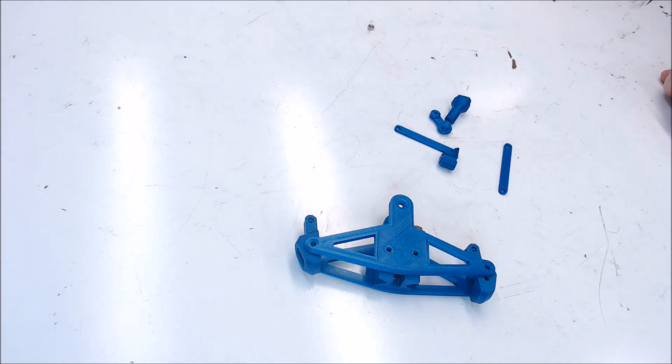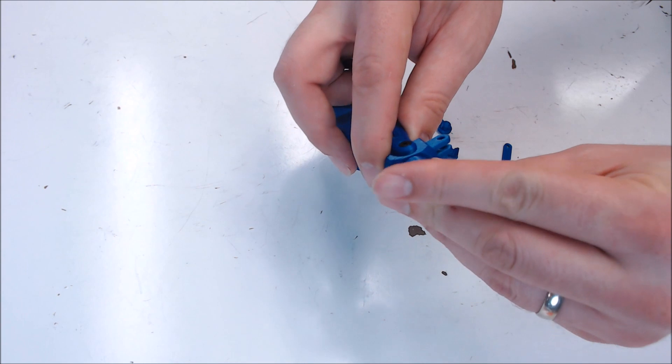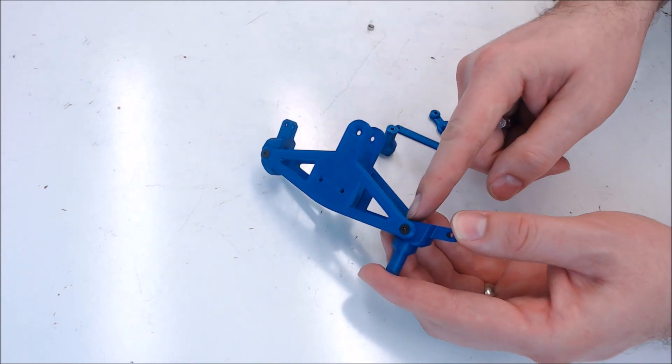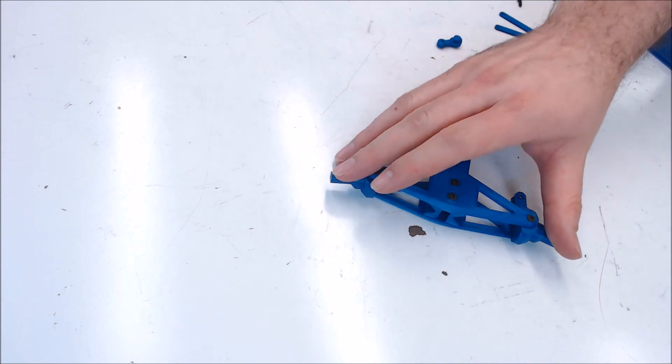Now you can attach the front axles. They just slide here into the spindle and they screw from the back. I use M3 x 10 millimeter screws for these. The axles are on.